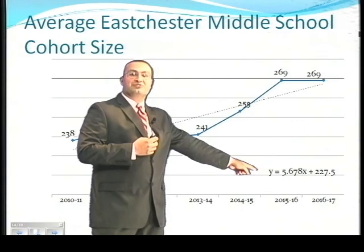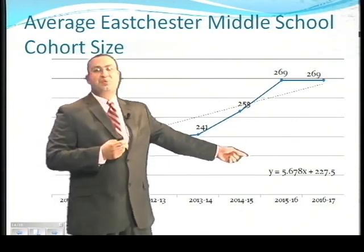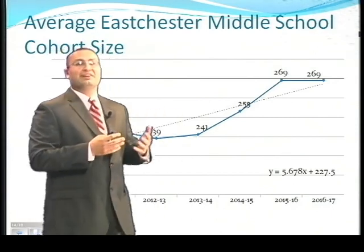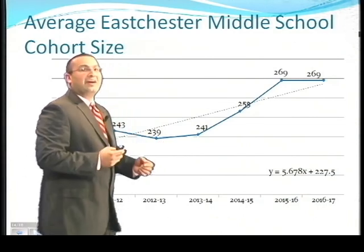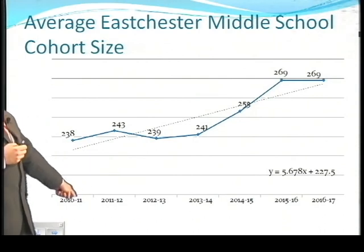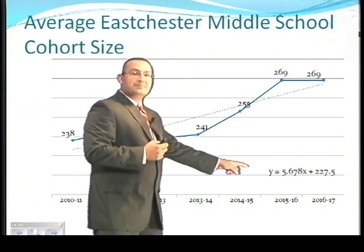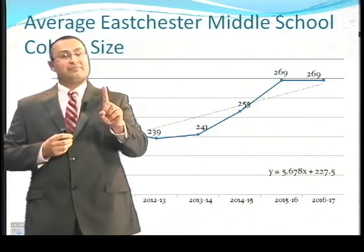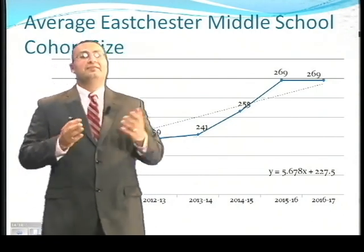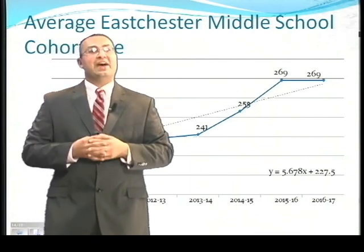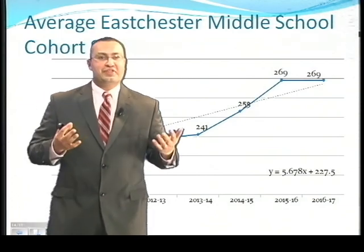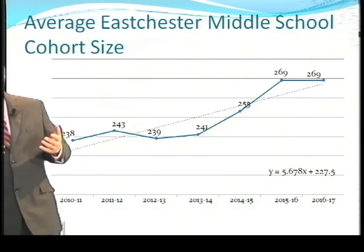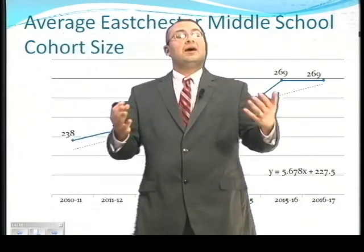The regression equation is indicated in the bottom corner of your screen: y equals 5.678x plus 227.5. To calculate enrollment using this equation, our first year of data is 2010-2011, which is year one. Substitute one for x: 5.678 times one, plus 227.5, gives roughly 233, which is exactly where our trend line takes us. For the 2011-12 school year, x would assume the value of 2, and each subsequent year would assume an x value of 1 greater.